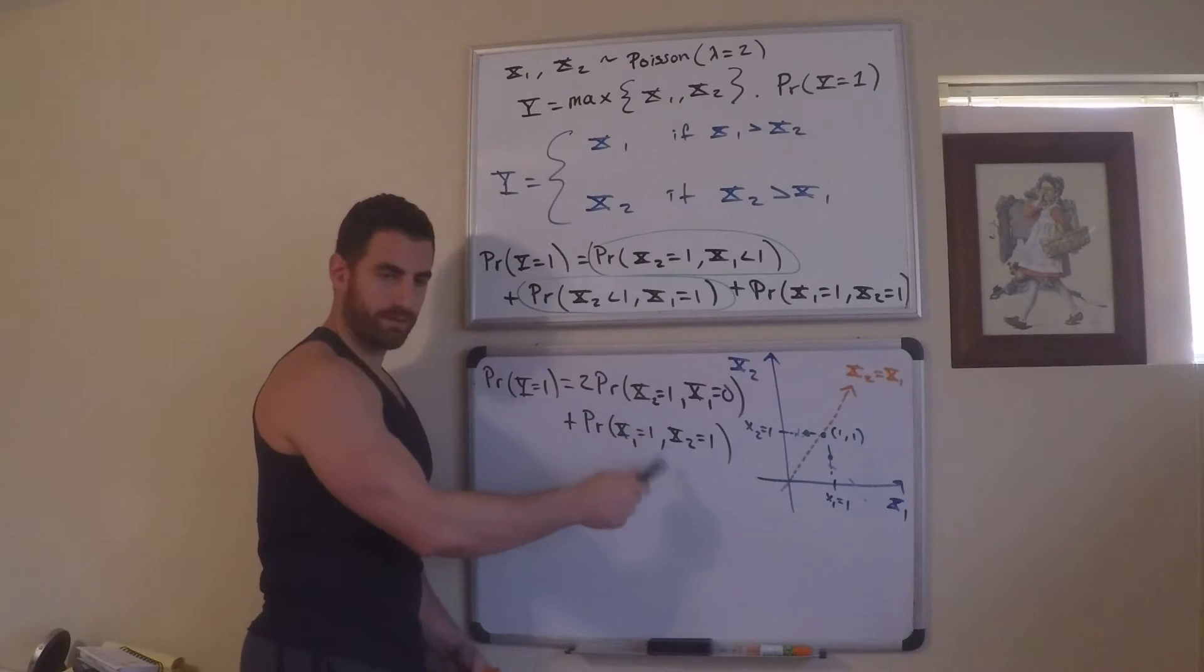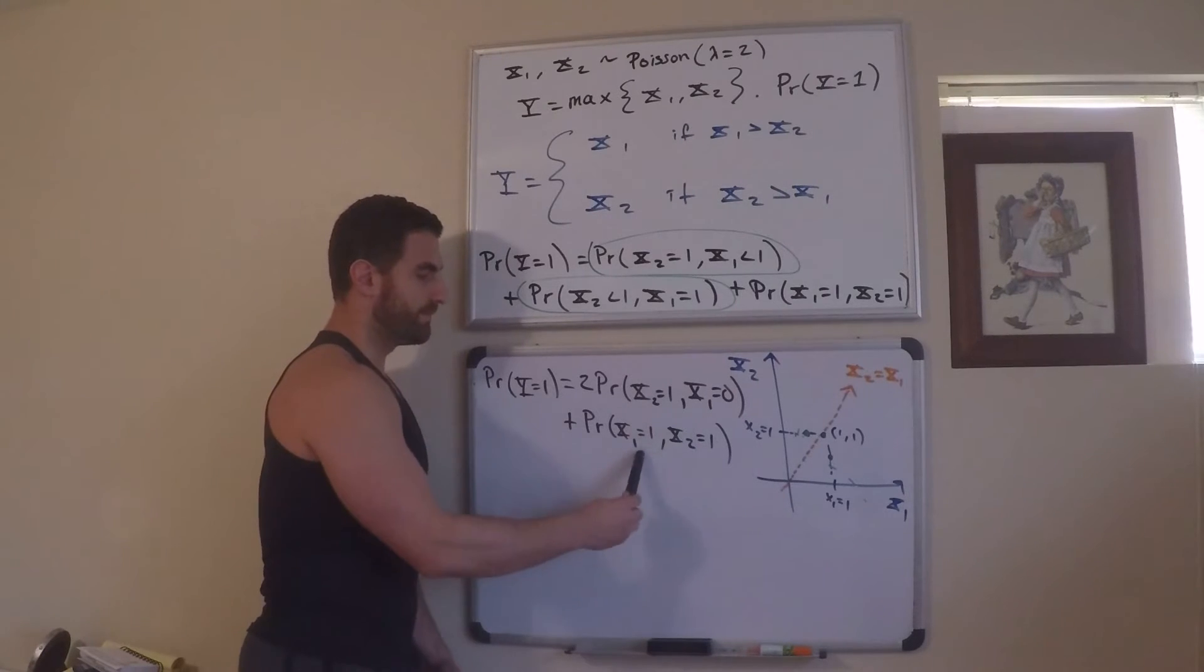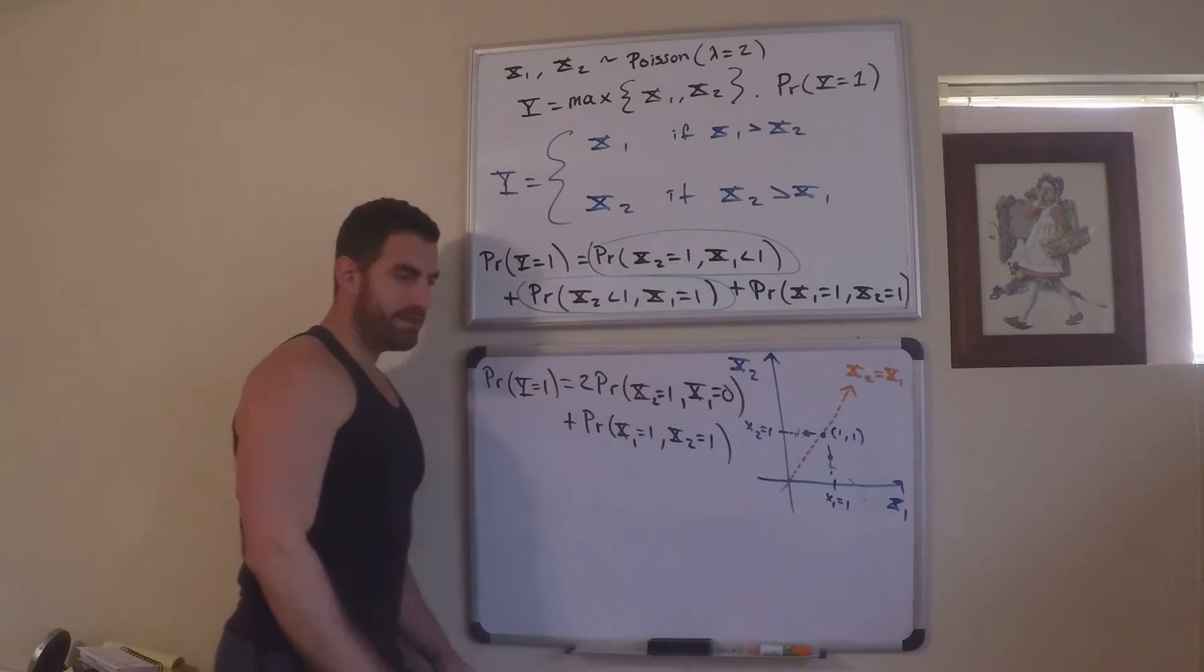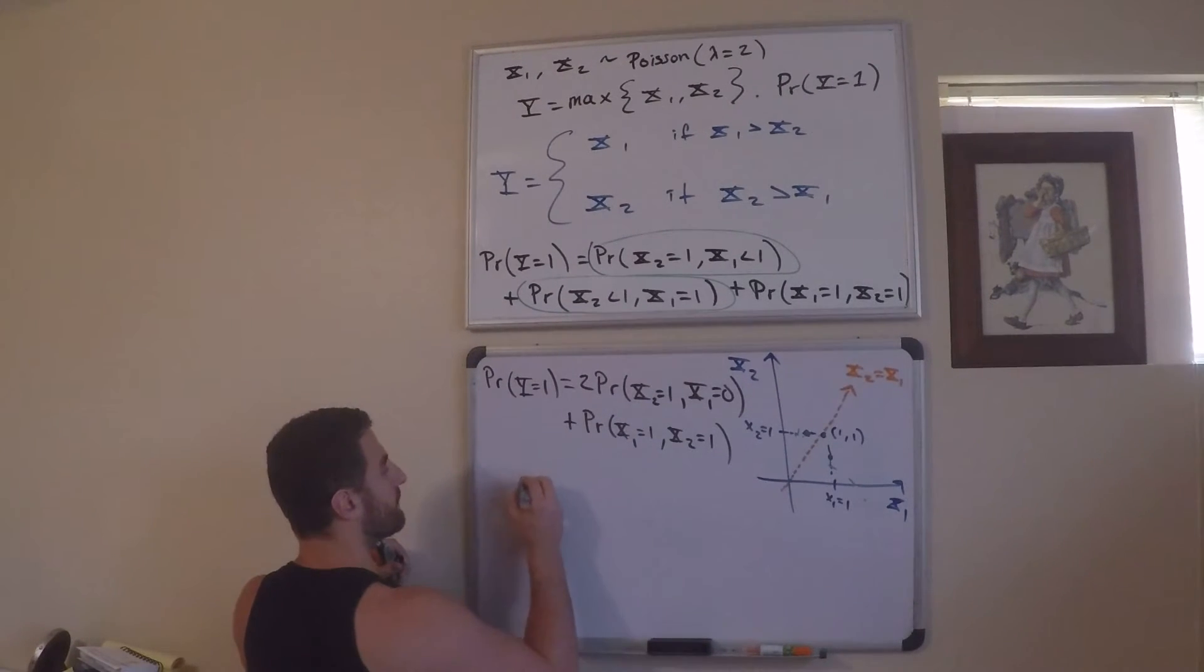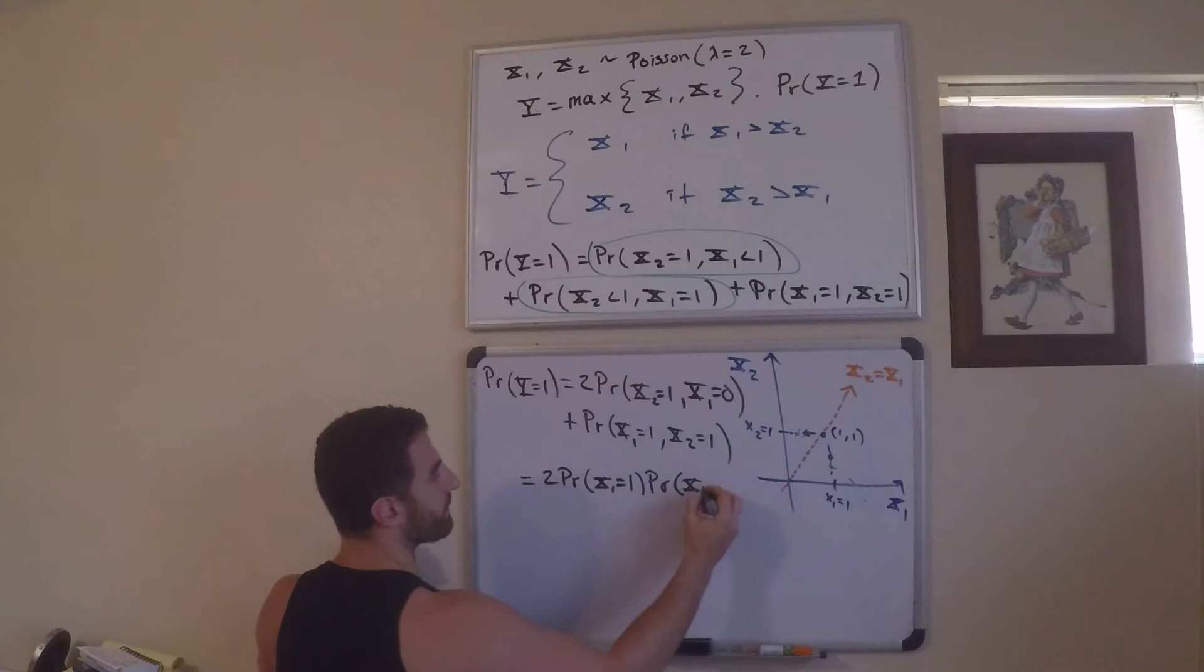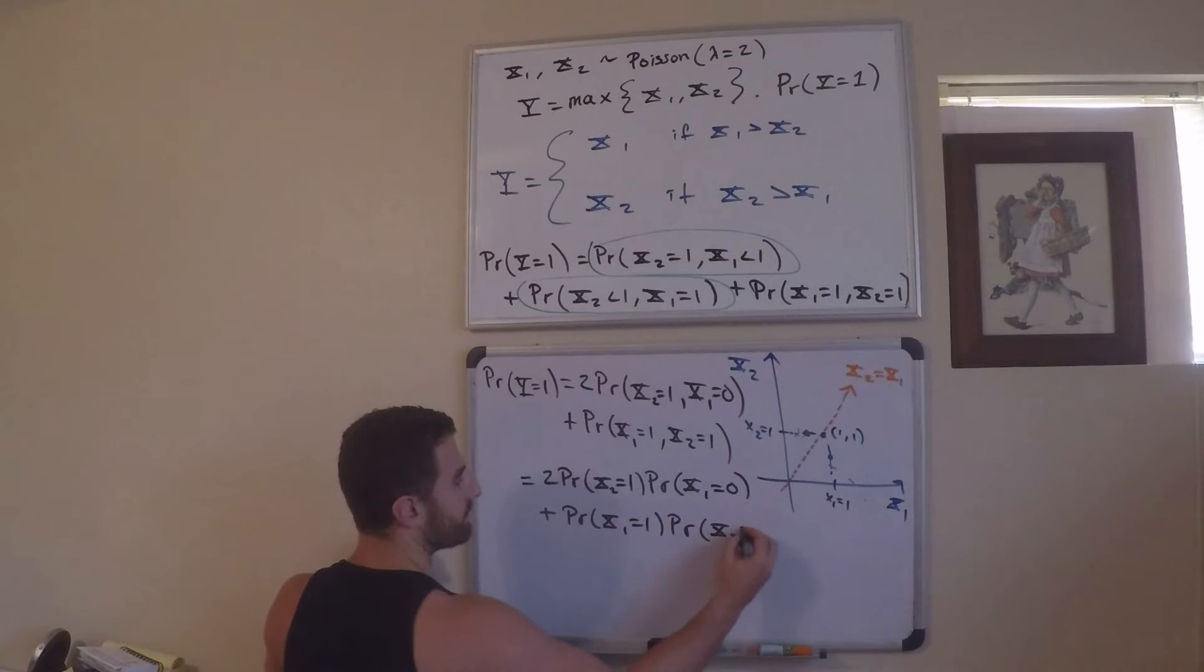So, I could put intersect, but I've been putting comma. This is pretty typical to mean and as well. So, this means and, right? So, comma means and. So, now I'm going to use the fact that these two random variables are independent. That tells me now that this is equal to 2 times the probability that x1 is equal to 1 times the probability that x2 is equal to 0. And then plus the probability that x1 equals 1 and the probability that x2 equals 1.